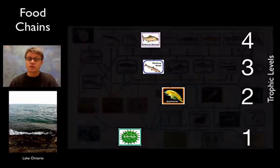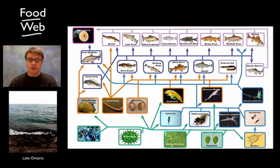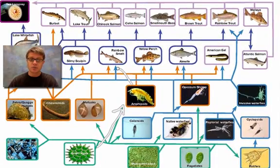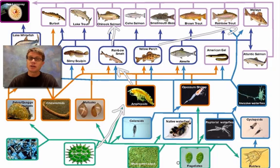If we add the other food chains in Lake Ontario, now we get what's called a food web. A food web shows all the connections — not only algae to amphipods to rainbow smelt to Chinook salmon, but also the flow from perch to walleye and all other interactions. In any ecosystem this is a fairly simple food web showing just the major ones. Obviously if we included all types of algae this would be a massive food web.